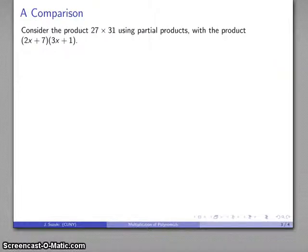For example, let's consider the product 27 times 31 with the product 2x plus 7 times 3x plus 1. Let's take a look at that. That's 31 times 27.